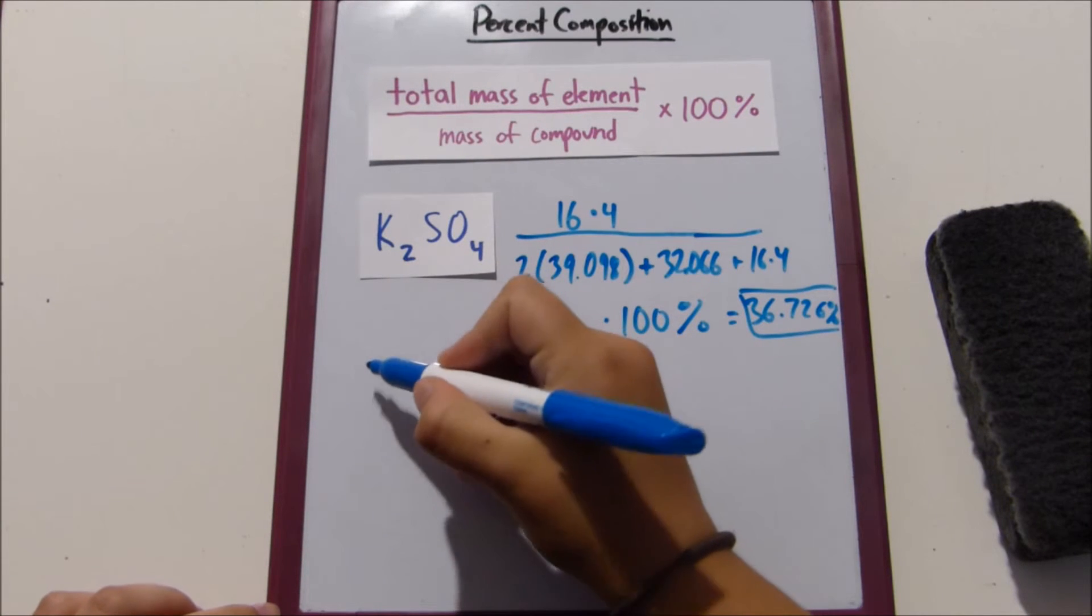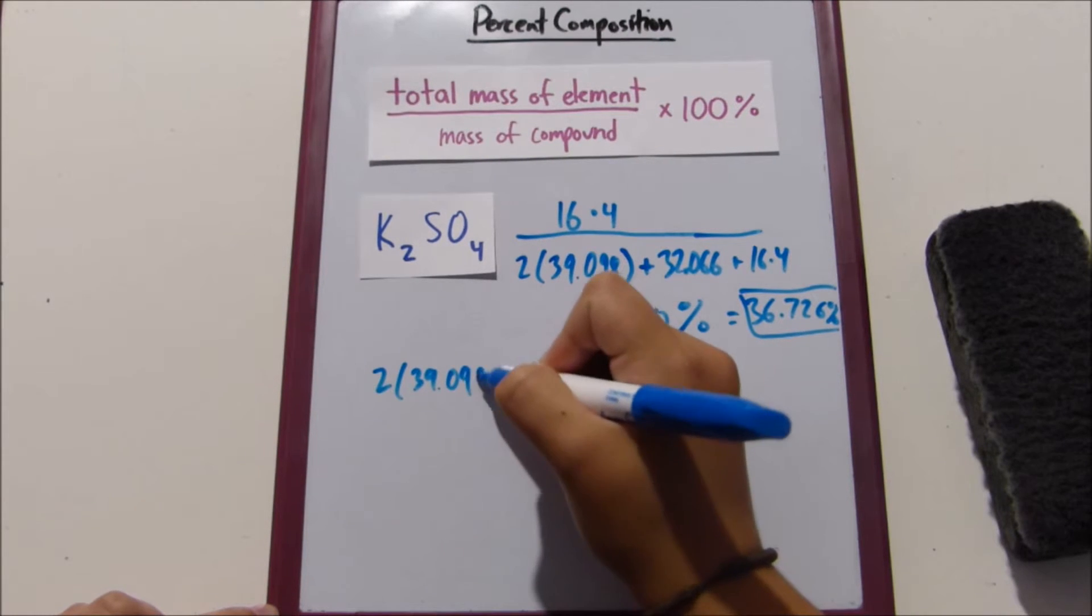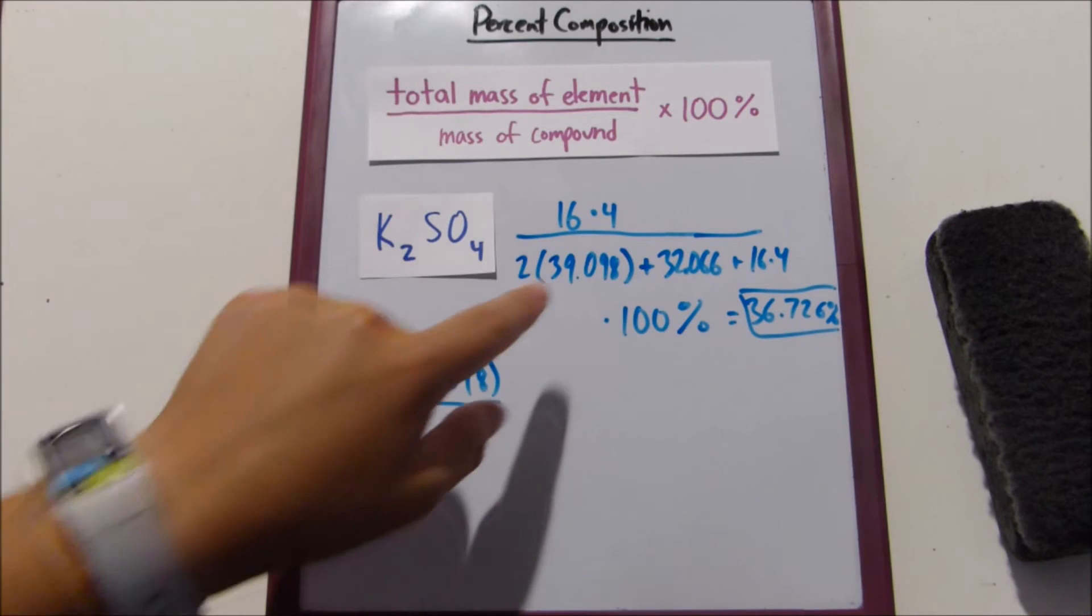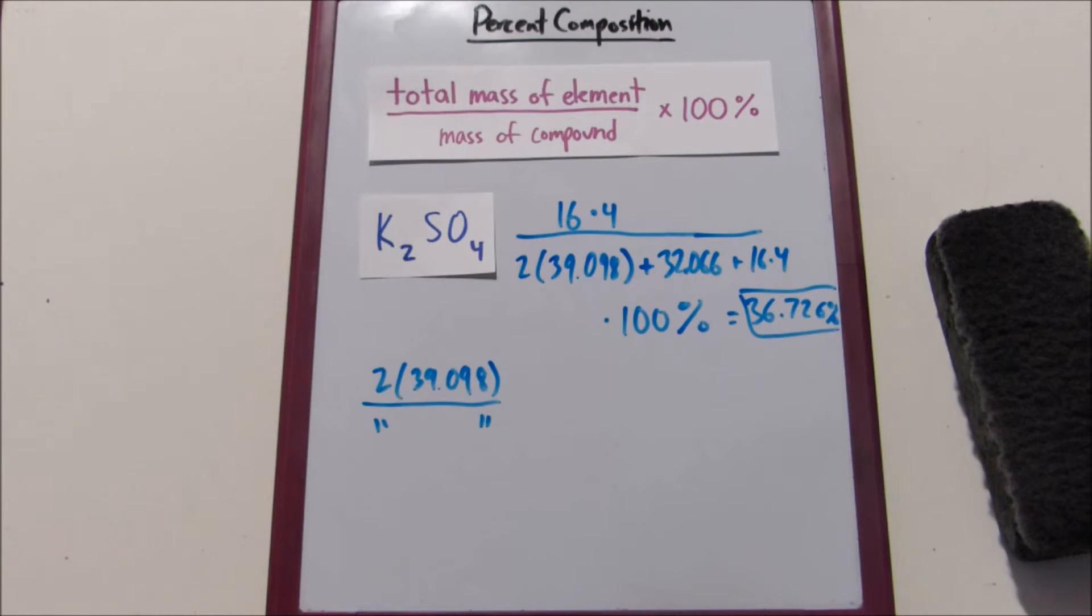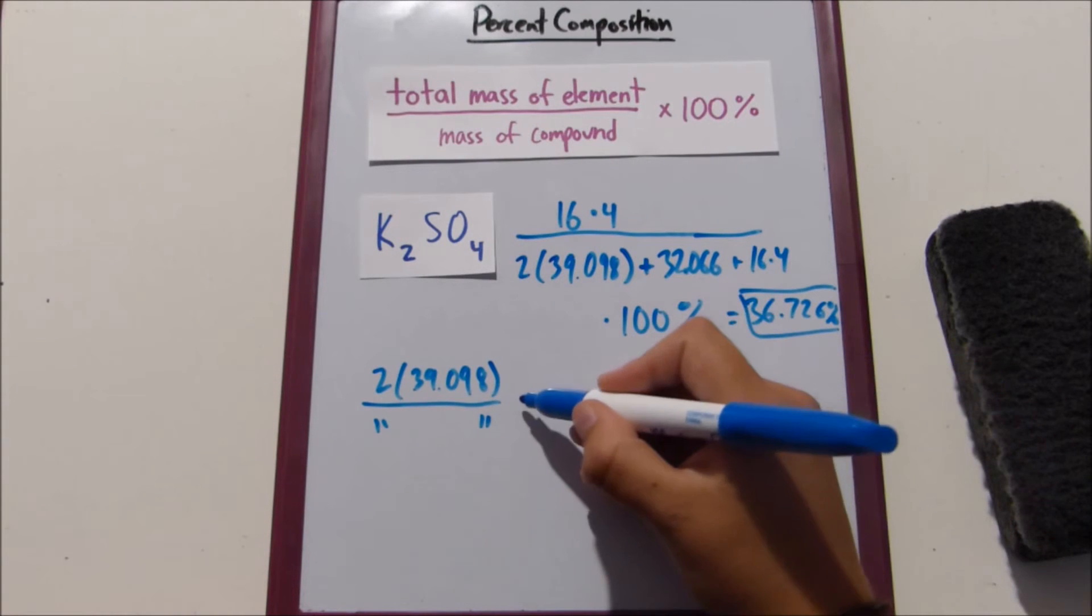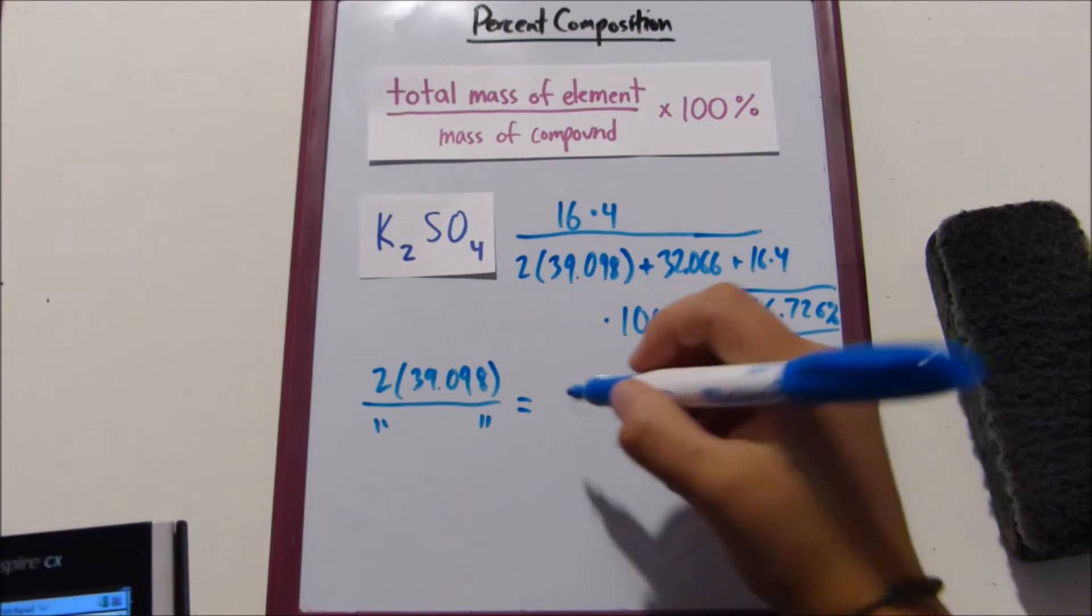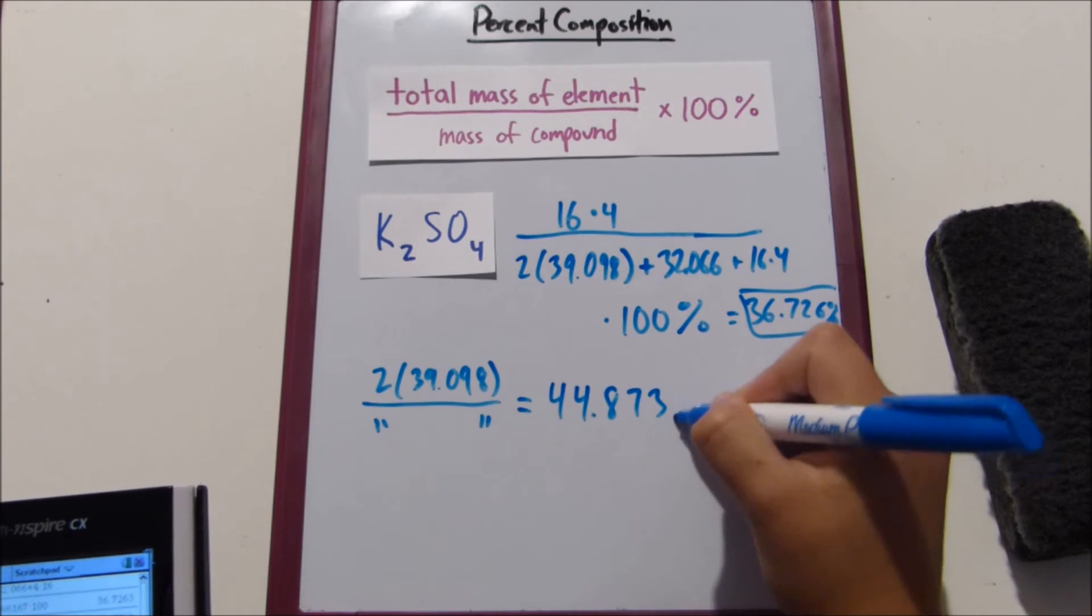Basically, we're going to try to find potassium's mass percentage. And then on the denominator, I'll just put these little quotation marks to symbolize that it's the same thing as the bottom here, which is what makes percent composition problems kind of easy. So that would be 44.873%.